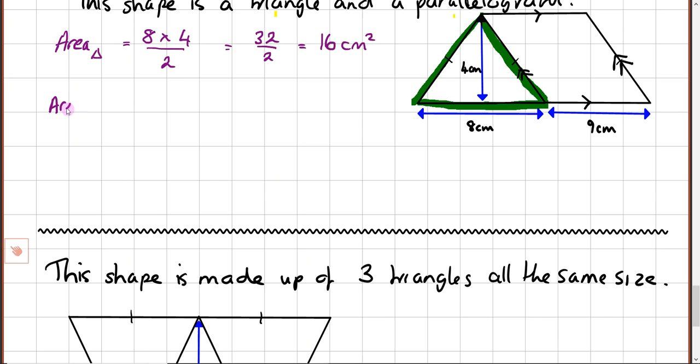So then I've got the area of the parallelogram. You know, so I've put little symbols so I know which one I'm working out. And how do I do that? Well, that's base multiplied by height, so my length. 9 multiplied by 4.